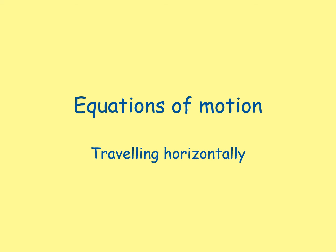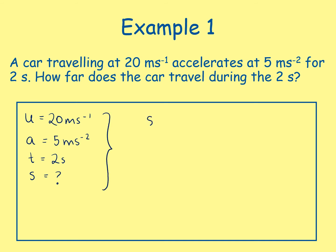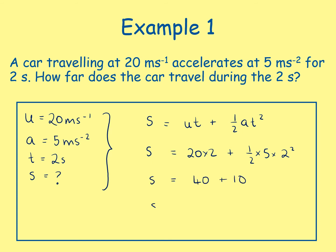Equations of motion travelling horizontally. Example 1: A car travelling at 20 metres per second accelerates at 5 metres per second squared for 2 seconds. How far does the car travel during the 2 seconds? Writing down the known values: u = 20 m/s, a = 5 m/s², t = 2 s, and we want to find s. Using s = ut + ½at²: s = 20 × 2 + ½ × 5 × 2² = 40 + 10 = 50 metres.